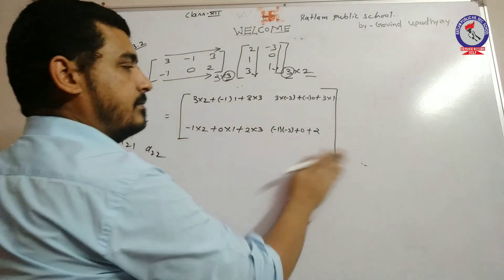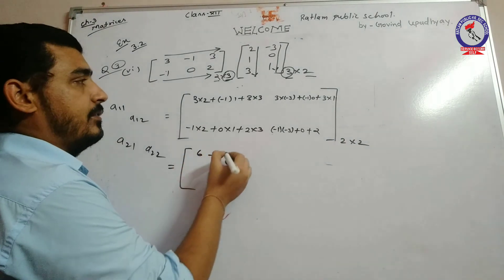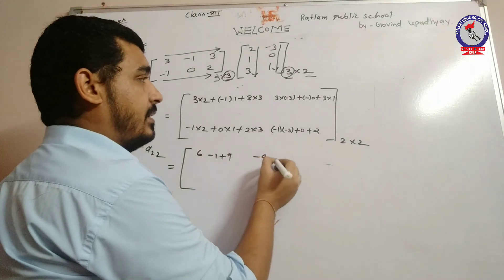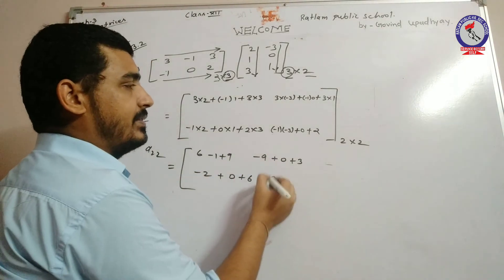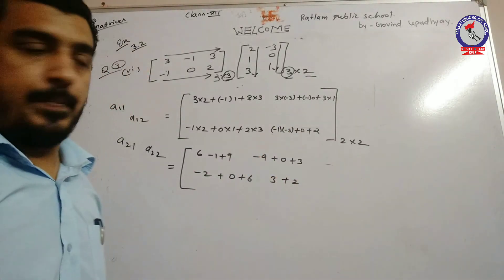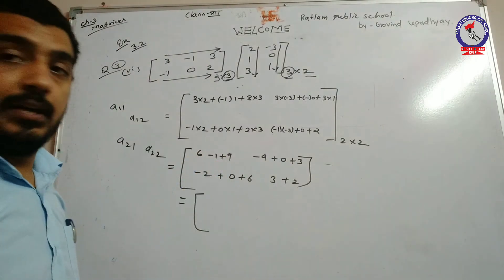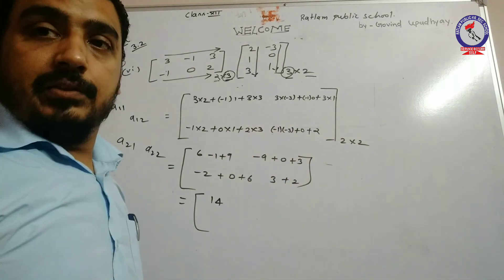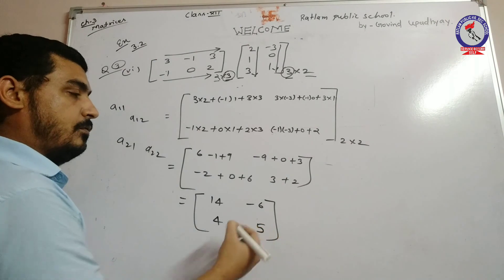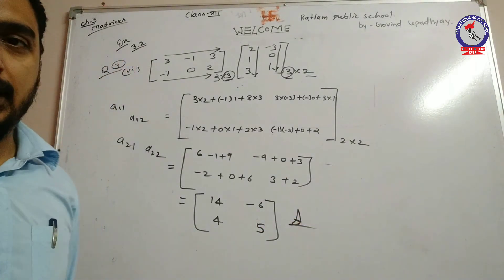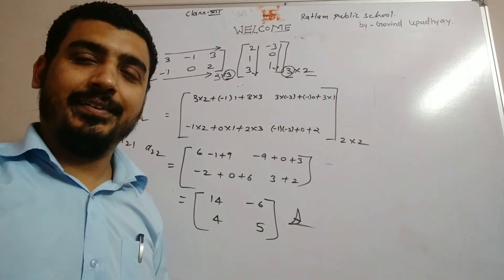So our final answer: A11 = 6-1+9=14, A12 = -9+0+3=-6, A21 = -2+0+6=4, A22 = 3+0+2=5. The answer matrix is [14, -6; 4, 5]. I hope now you will be able to multiply matrices and solve Exercise 3.2. Thank you and have a nice day.